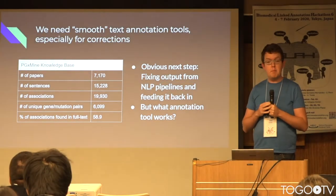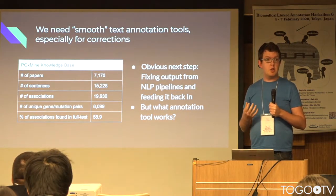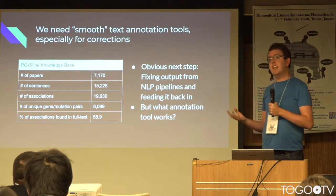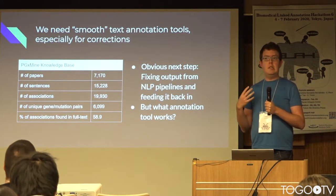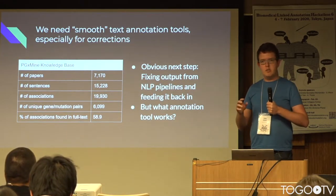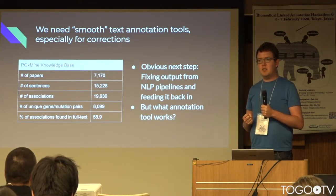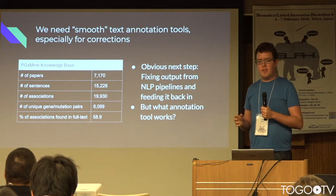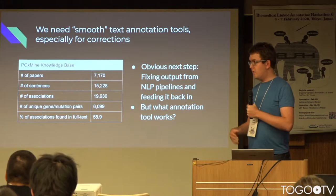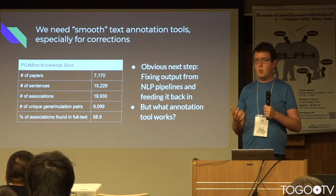We've built this thing, but the challenge is that there are mistakes in it. We want to figure out how to go about correcting them in a nice way — how do we give annotation tools to a team of curators that normally do document-level curation and aren't so used to working with more intense annotation platforms, so they can go in and fix things themselves?